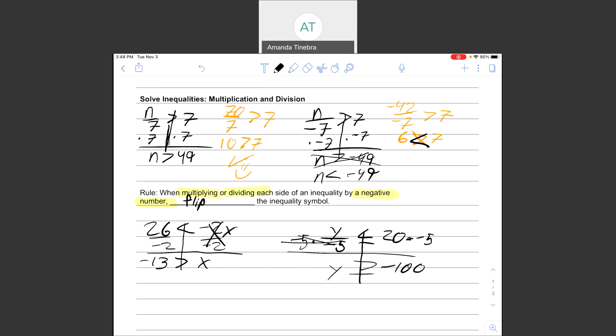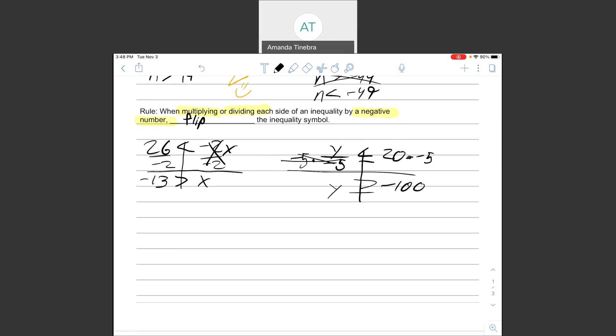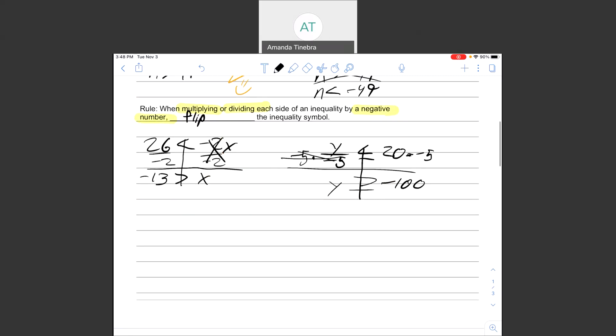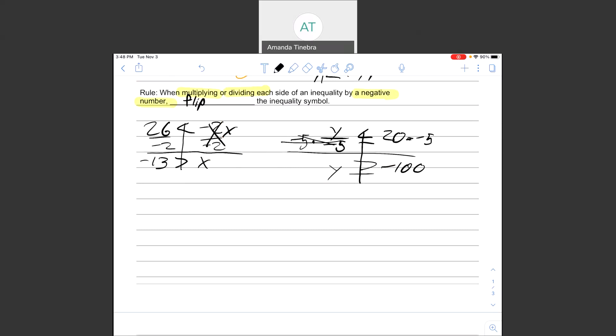When this gets especially tricky to remember, but also especially important to remember, is when we are solving equations that are more than one step. So let's say I had 4p minus 9 is greater than or equal to negative 1.